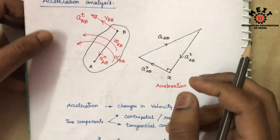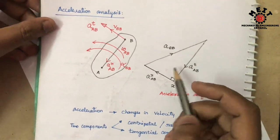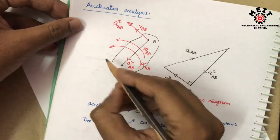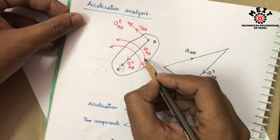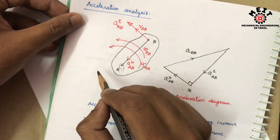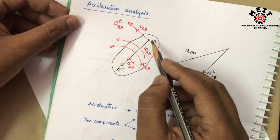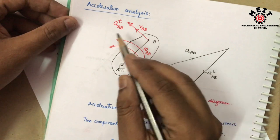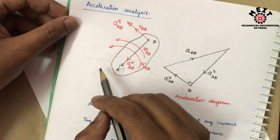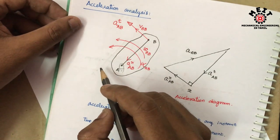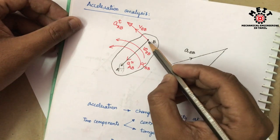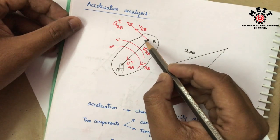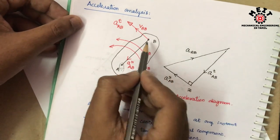For acceleration analysis, we have to see how many components there are. Normally, one link — link A, B — with link A fixed. Then the link is rotating in the anticlockwise direction. So one point is fixed and one point rotates. Then it has two different acceleration components.